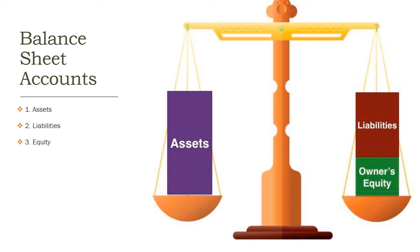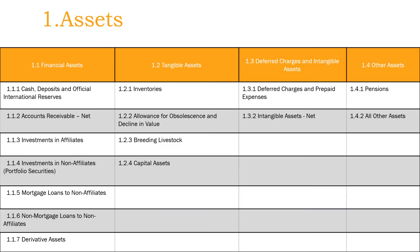I'll tell you the numbers and names of the accounts to memorize. 1. Assets. 1.1. Financial assets: 1.1.1 Cash, deposits and official international reserves; 1.1.2 Accounts receivable net; 1.1.3 Investment in affiliates; 1.1.4 Investments in non-affiliates portfolio securities; 1.1.5 Mortgage loans to non-affiliates; 1.1.6 Non-mortgage loans to non-affiliates; 1.1.7 Derivative assets.